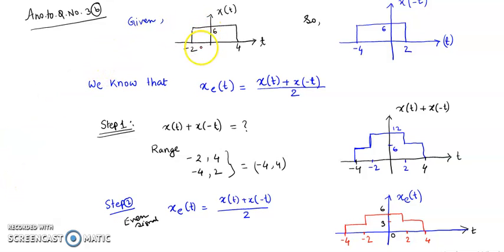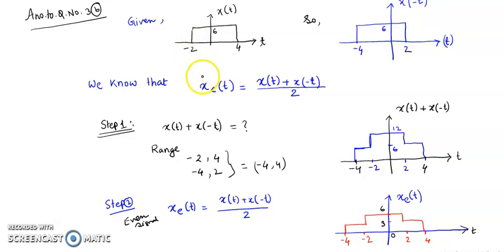A signal x(t) is given, defined for t equal to minus 2 to 4 with an amplitude of 6. The problem asks us to find the even and odd parts of the signal x(t). To find the even part, we use the equation: x_e(t) is equal to x(t) plus x(minus t), divided by 2.